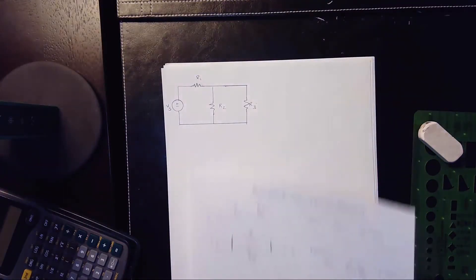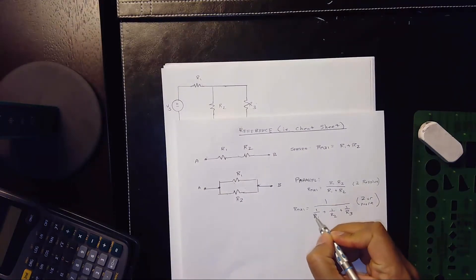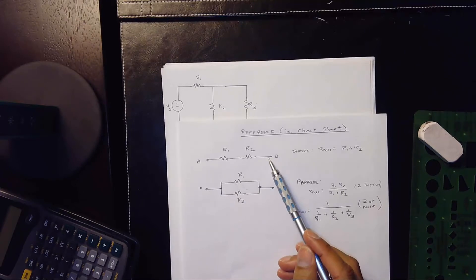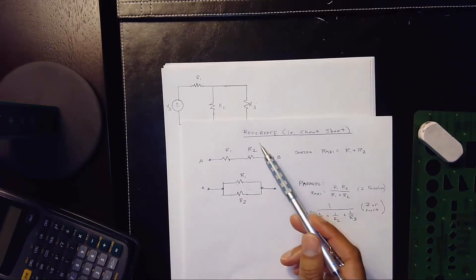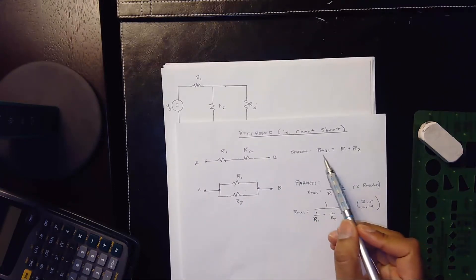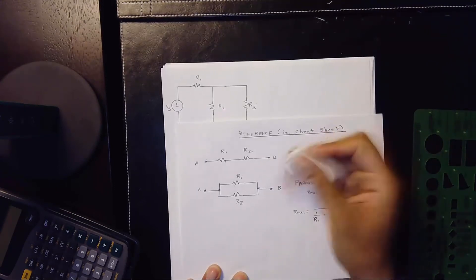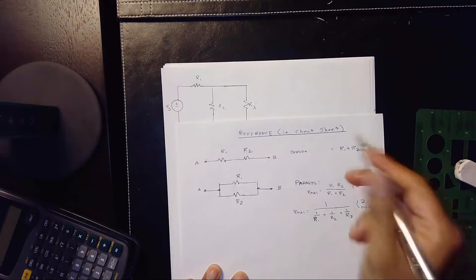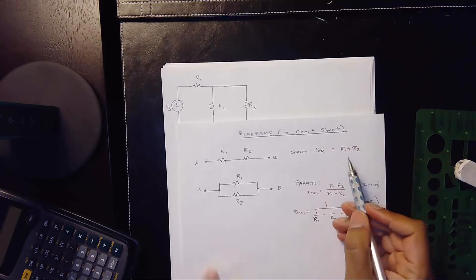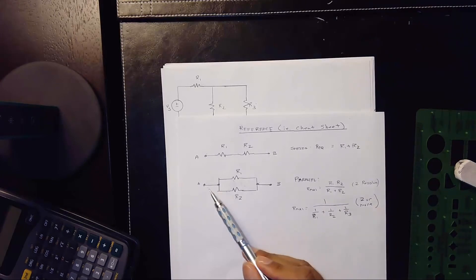I have a reference sheet to put out for you. Number one: if you go from node A to node B and encounter two resistors along a single path, that's called a series circuit. A series equivalent resistance is defined as REQ equals R1 plus R2.